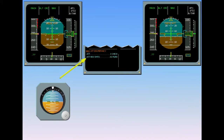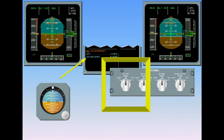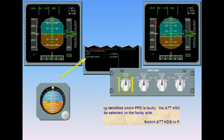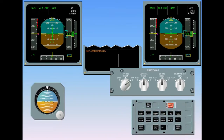Having identified which PFD is faulty, the attitude heading switch should be selected to the faulty side. Switch attitude heading to first officer on three. IR-3 is now supplying the first officer side, and aircraft attitude on his PFD is back to normal. The check attitude indications have disappeared, as has the ECAM attitude discrepancy.